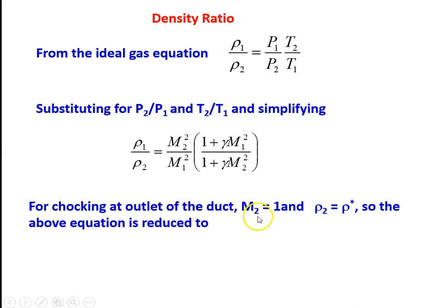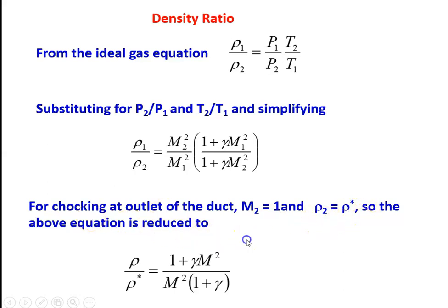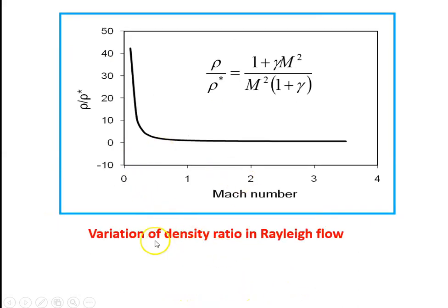For choking at the outlet of the duct, we substitute M₂ = 1 and ρ₂ = ρ*. The equation is reduced to ρ/ρ* = (1 + γM²) / (M² × (1 + γ)). Plotting the variation for γ = 1.4 for various Mach numbers, the density ratio ρ/ρ* is plotted here. The line indicates the equation which represents the density variation with respect to Mach number for γ = 1.4.